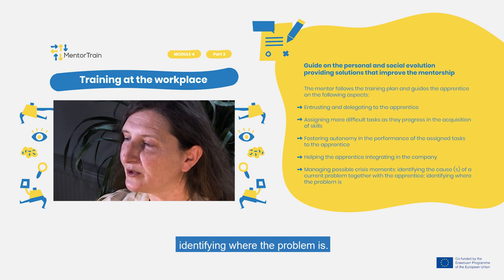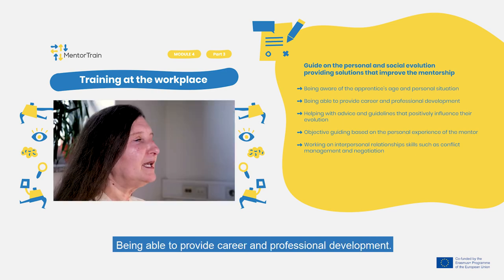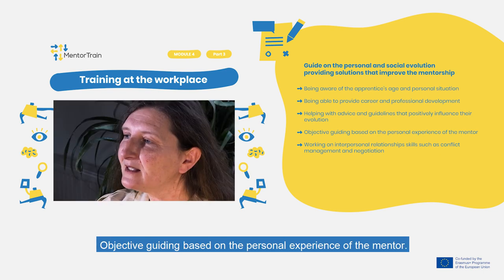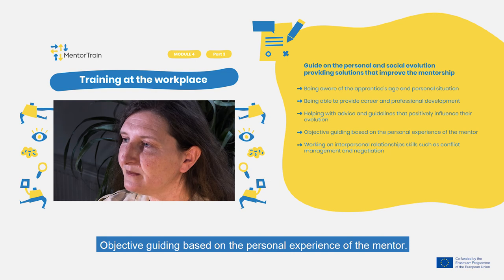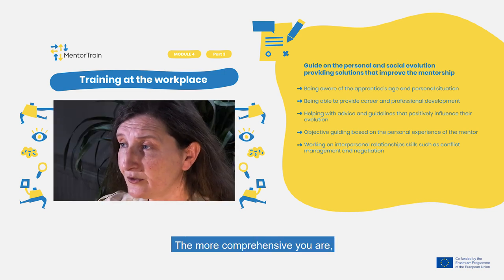Identifying where the problem is, being aware of the apprentice's age and personal situation, being able to provide career and professional development, helping with advice and guidance that positively influence their evolution, objective guiding based on the personal experience of the mentor, and working on interpersonal relationship skills such as conflict management and negotiation.